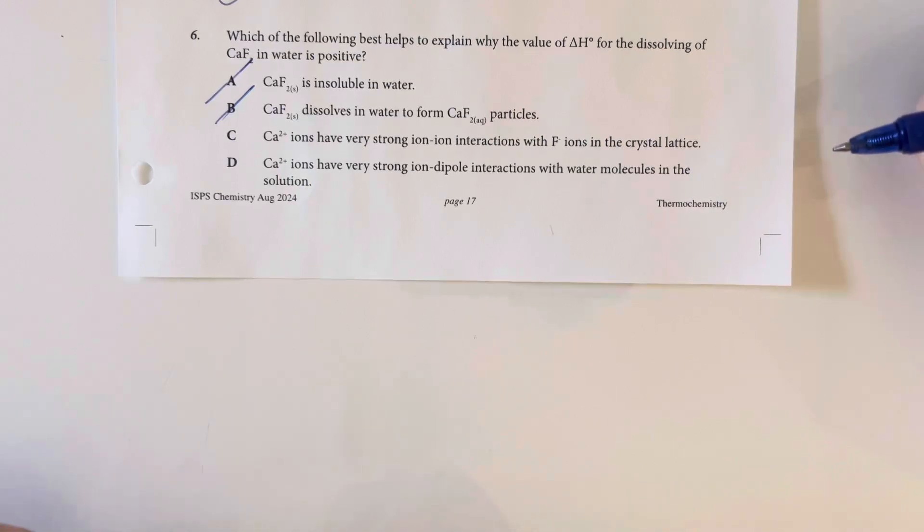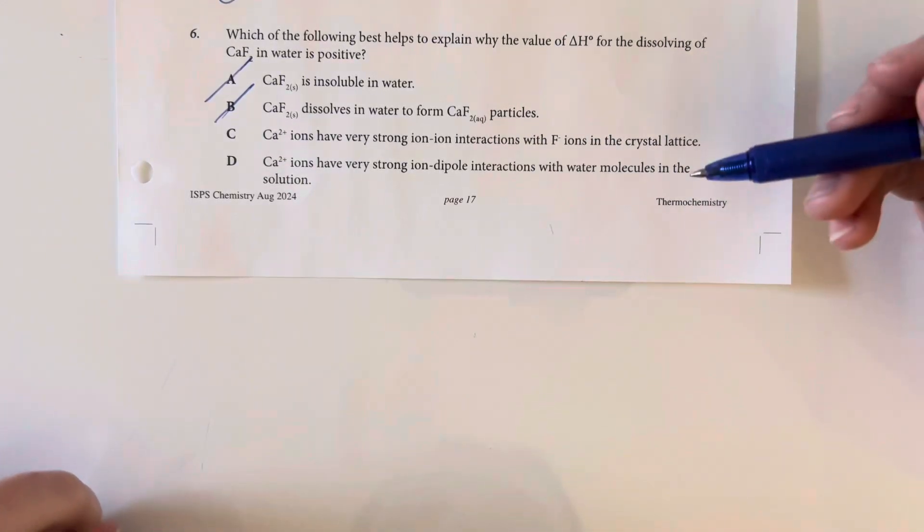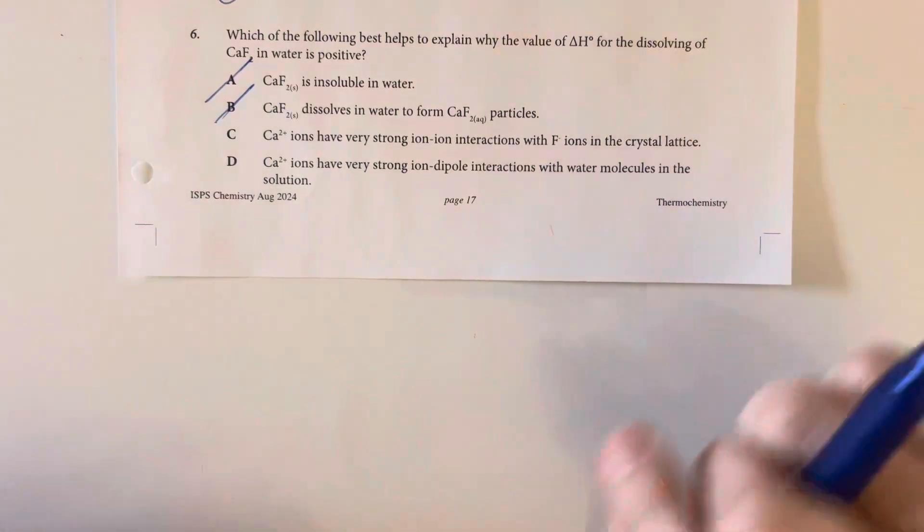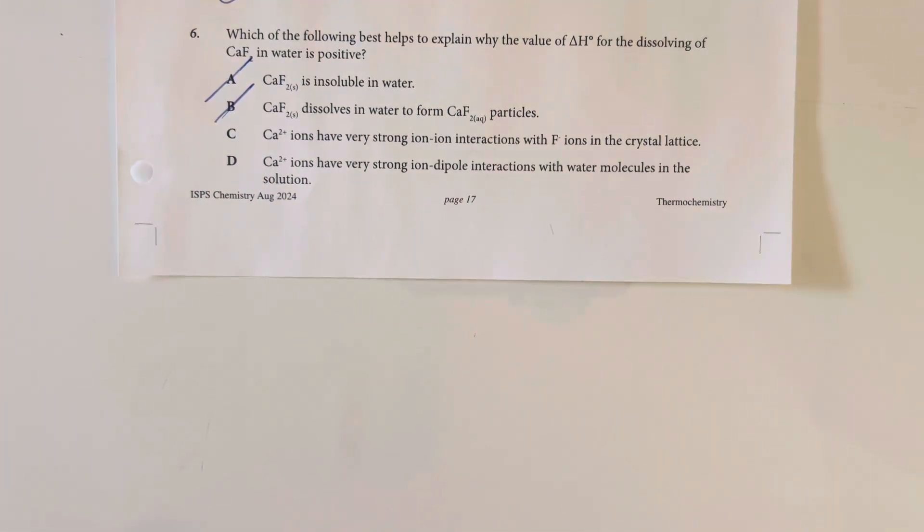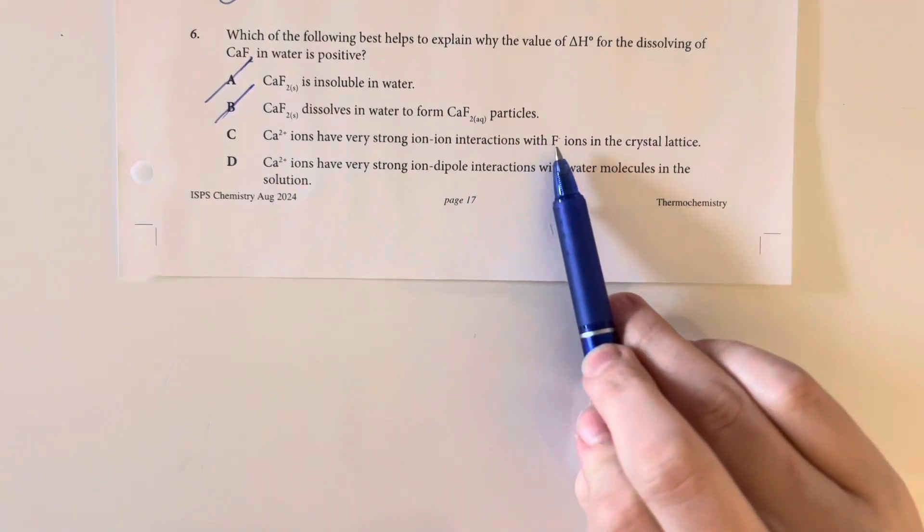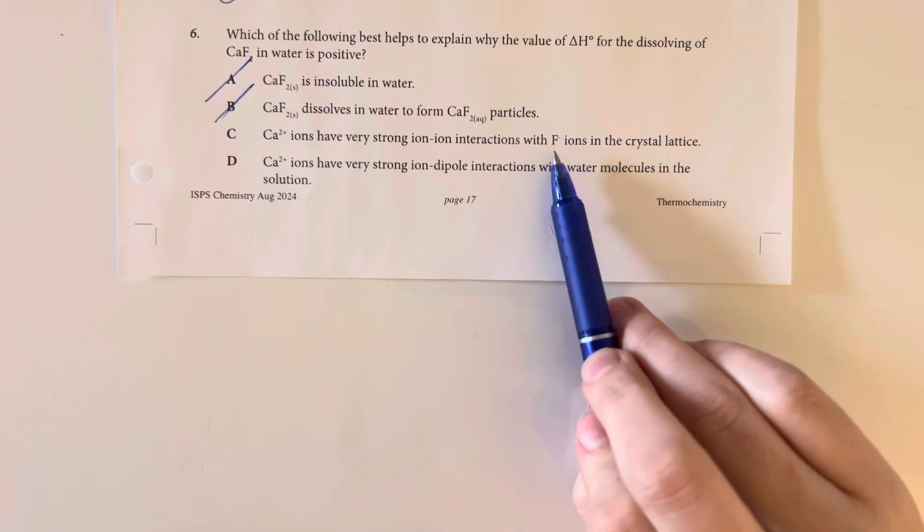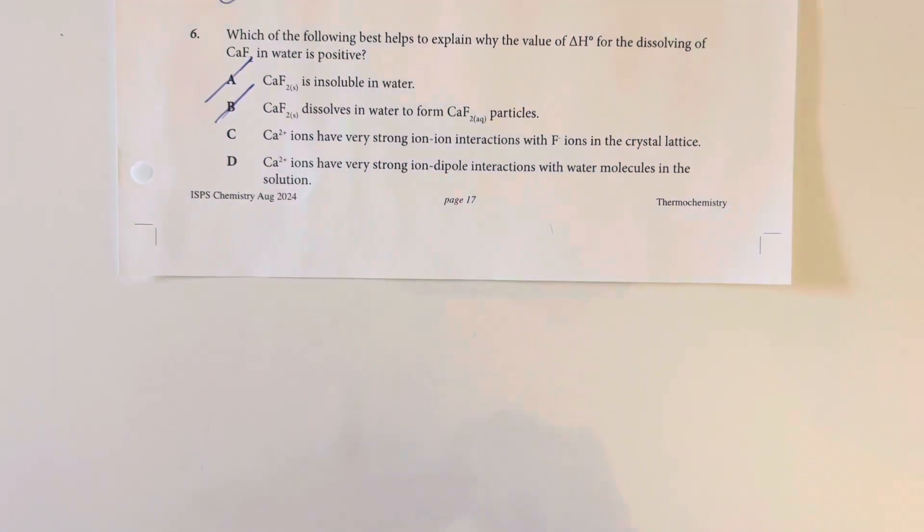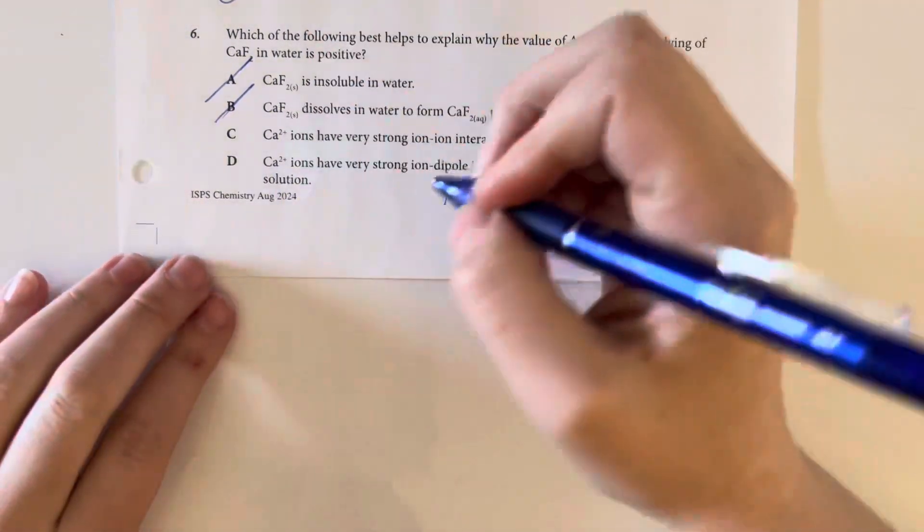Calcium ions have a very strong ion-ion interaction with a fluorine ion in their crystal lattice. They are very attracted to each other. We have that Coulomb's law going on where we have a very strong charge from calcium of positive two, and we have our fluorine being very, very small, which means that we can get it very, very close to that calcium, and so we have a very short distance as well. This makes sense.